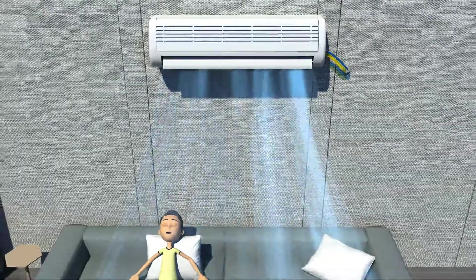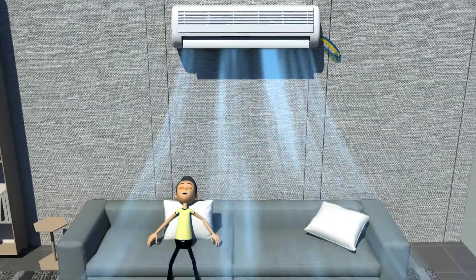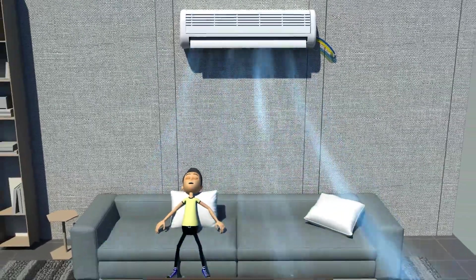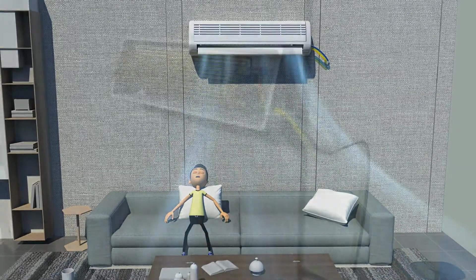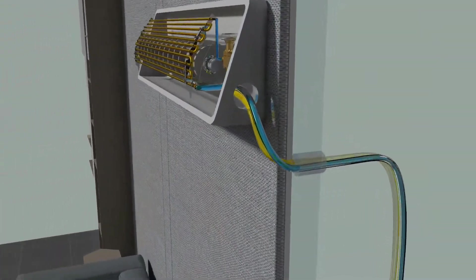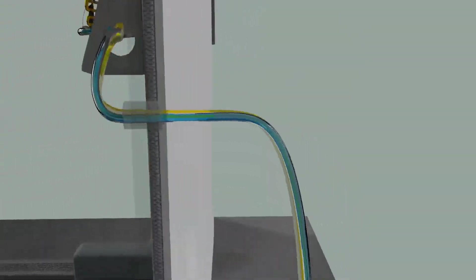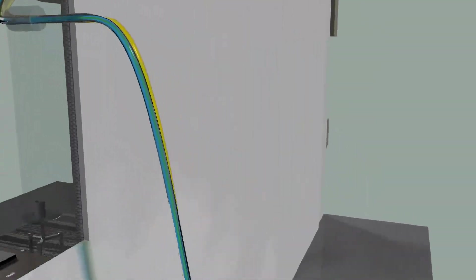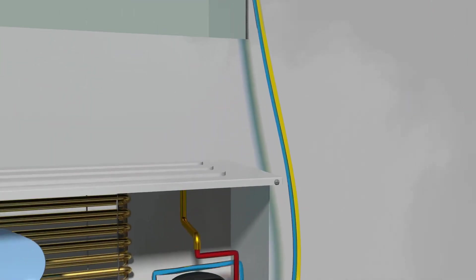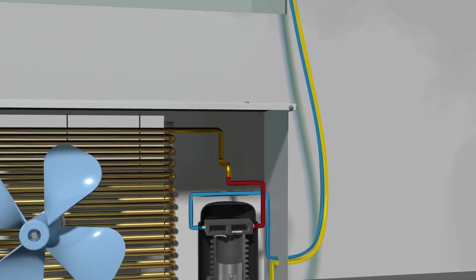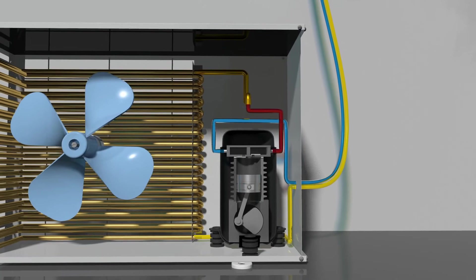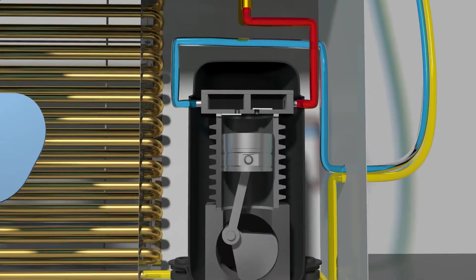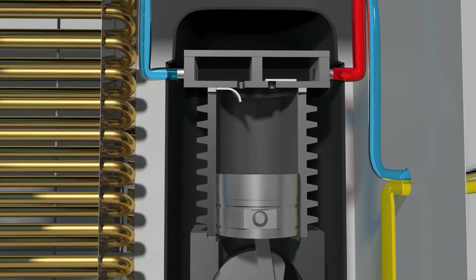Now let's dive deeper into the functions of each mechanical component of an air conditioner. In the evaporator, refrigerant absorbs heat and is evaporated as gas into the compressor. When a piston compresses the gas refrigerant, its pressure rises and so does its temperature.